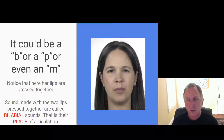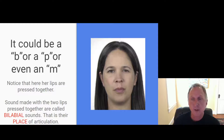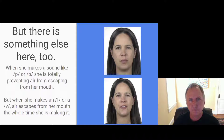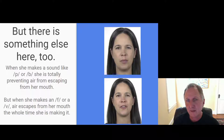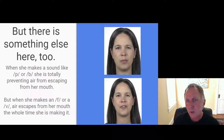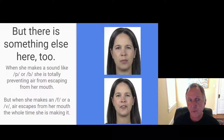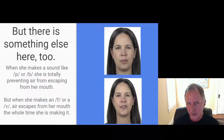We now have bilabial and labiodental as places of articulation. But there's one other thing to notice when comparing the two pictures. When she makes a sound like P or B, she totally prevents air from escaping from her mouth while producing it. But when she makes an F or V, air escapes from her mouth the entire time she is making the sound.